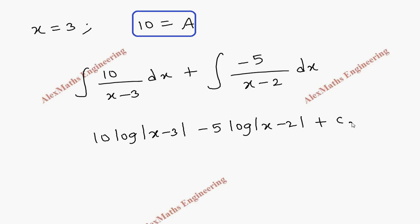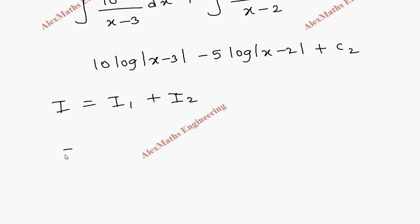Now we are going to combine both to get I, that is I₁ plus I₂. I₁ is x plus c₁, so let's take x. I₂ is 10 log |x - 3| minus 5 log |x - 2|, and c₁ and c₂ come together is written as c.